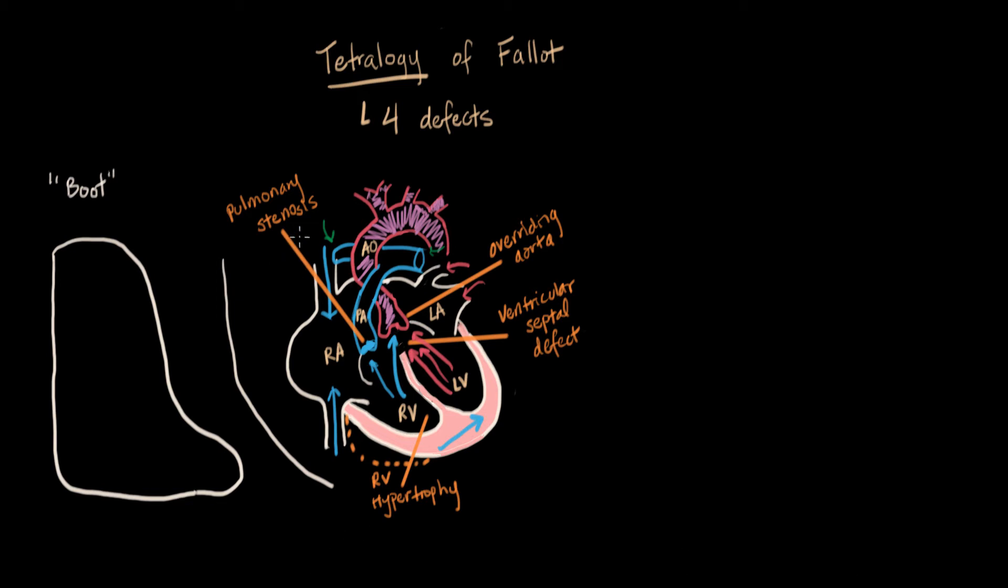Sometimes kids who have tetralogy can have a sudden tet spell, which is when they get acutely worse, and they can't breathe. That's because their pulmonary artery pressure or resistance from the lungs has suddenly increased. All that does is create more back pressure in the pulmonary artery. It's already hard to get blood in here, and the tet spell makes it even worse. So tet spell shunts more blue blood into the aorta. This mixture becomes even bluer. This is a life-threatening emergency in tetralogy.